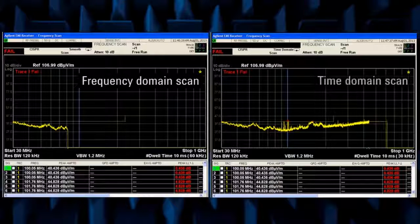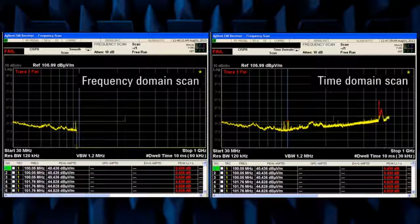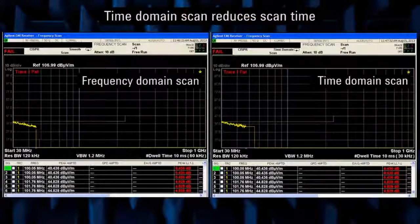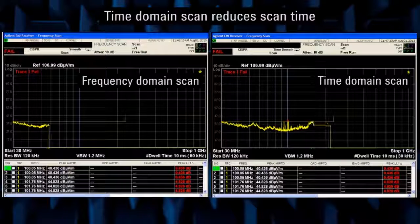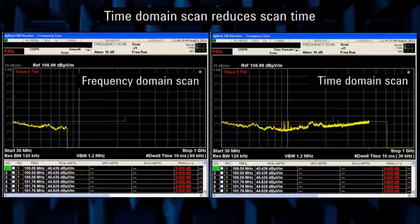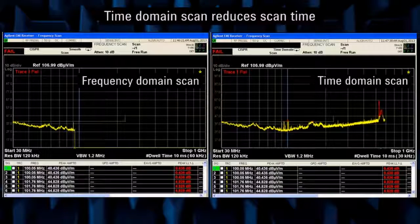With time domain scan, an alternative method based on FFT, the MXE can reduce scan time from minutes to seconds for a single scan. For hundreds of scans, time domain scan reduces the total scan time from hours to minutes resulting in a significant cost savings.